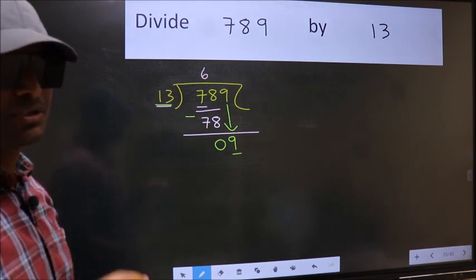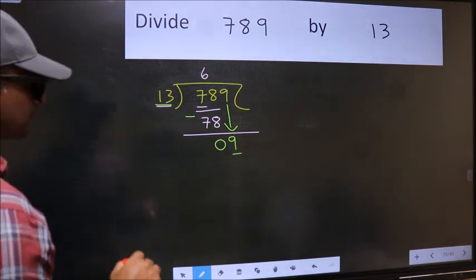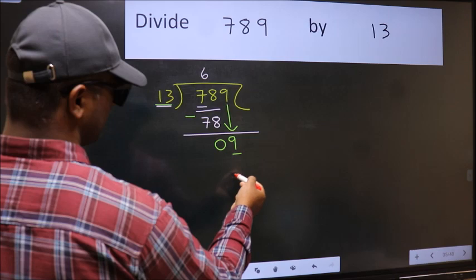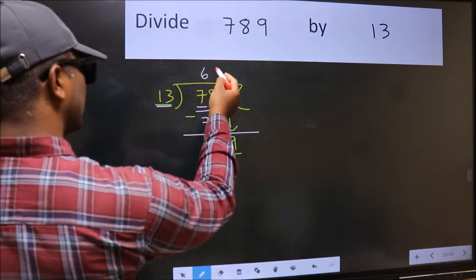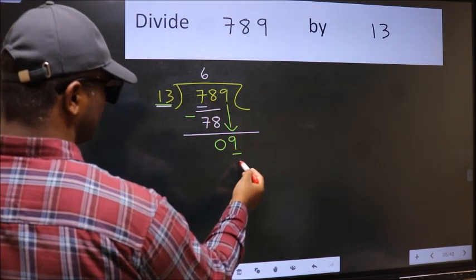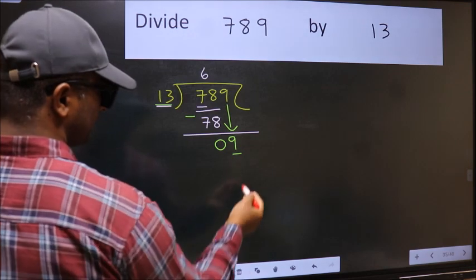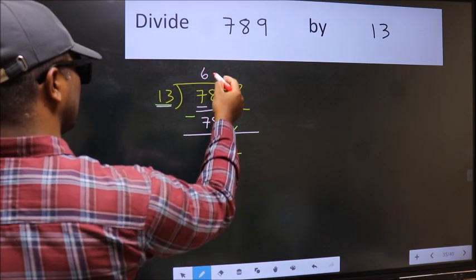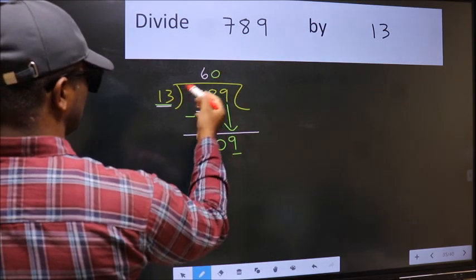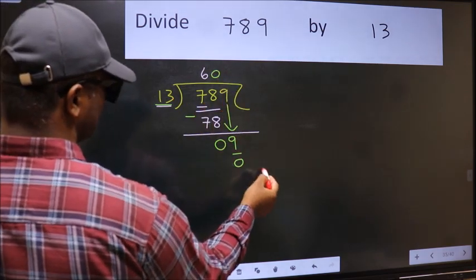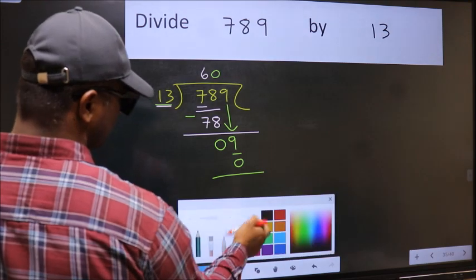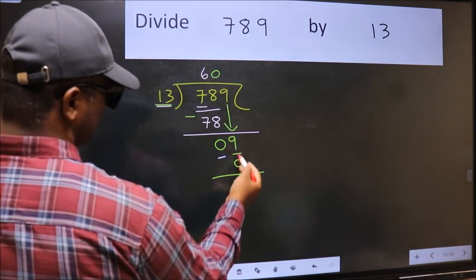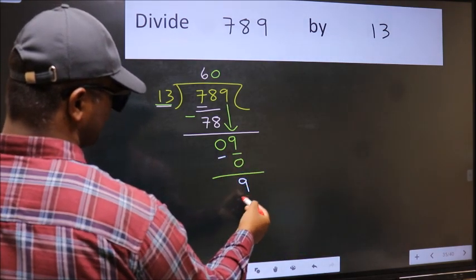Instead, what you should think of doing is, which number should we take here? If I take 1, we will get 13. But 13 is larger than 9. So what we should do is we should take 0. So 13 into 0 is 0. Now we should subtract. 9 minus 0 is 9.